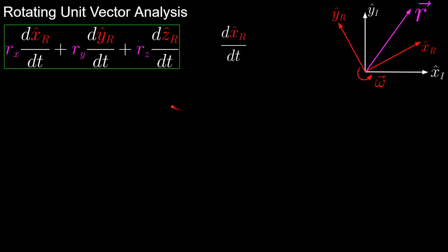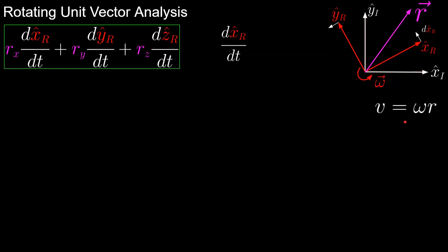Here we have the same expression in the green box, and we're going to figure out how to calculate the derivatives of the unit vectors, starting by analyzing how the x unit vector is changing. In the diagram, the rotating reference frame is rotating counterclockwise, so at this exact moment, the change in x is perpendicular to the x unit vector in this direction. The magnitude of the velocity of the x unit vector is omega times r — this is just an equation of circular motion.